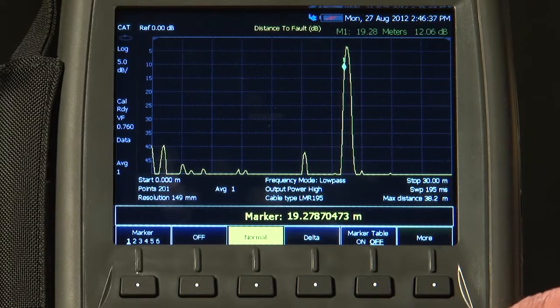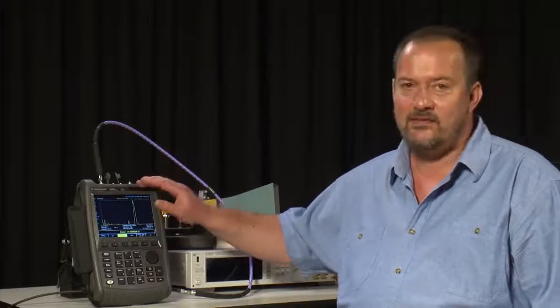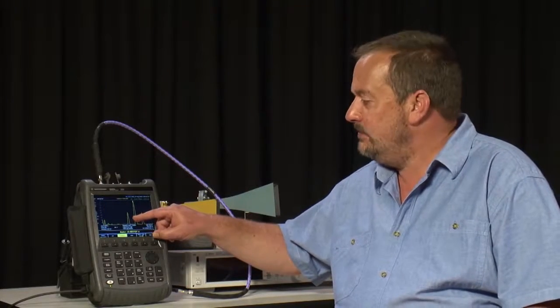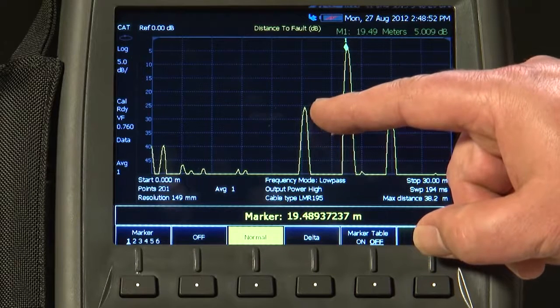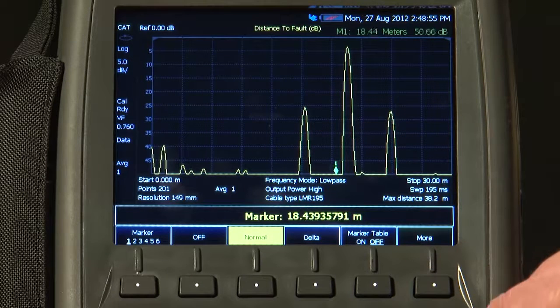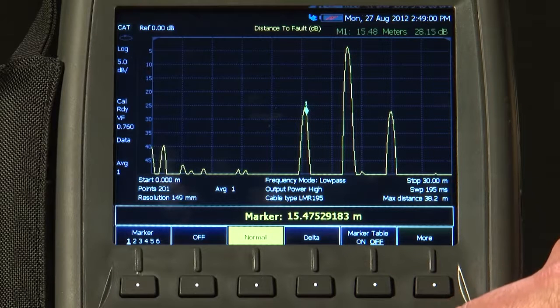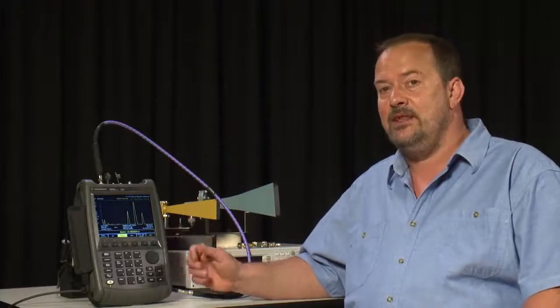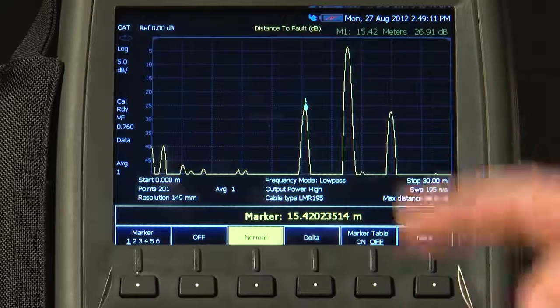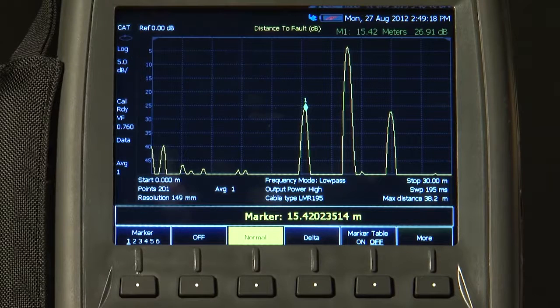So you can see here that the antenna is 19.44 meters from the FieldFox. I have now replaced what was a good quality bulkhead connector with a cheap adapter. And you can see immediately now that the response of that has increased significantly. And in fact, if we put the marker on there, you will see that we have a return loss of 26.9 dB. Now, that may be acceptable in your setup. And in any case, it at least shows a sign of perhaps degradation. Maybe it needs to be fixed next time you are out on site.